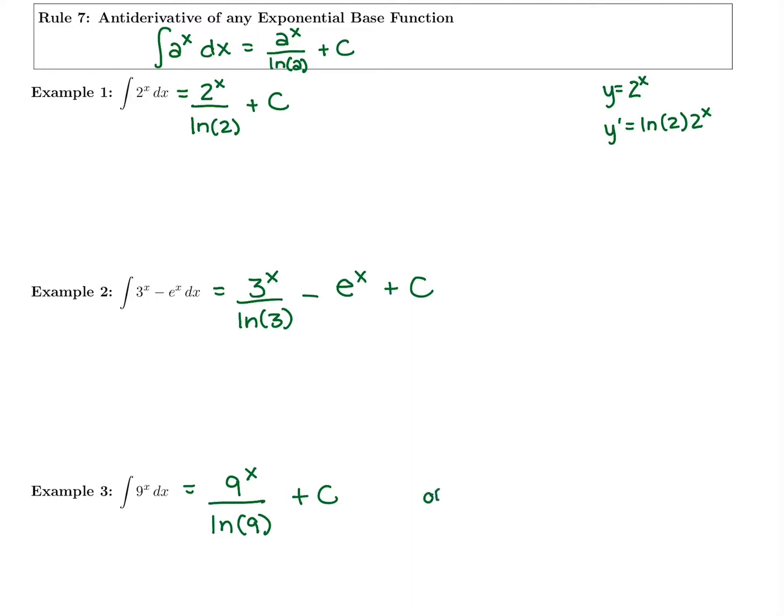Or another way of writing that, whichever ends up being easier for you to plug into your calculator. Instead of saying divided by ln of 9, you could put it out front. 1 over ln of 9 times 9 to the x plus c. Whatever is easier for you to plug into your calculator. It's the same thing as doing 1 half out front instead of dividing by 2. So there's a couple ways to write this rule, but I would typically say it is going to be your base to your power over ln of your base. So 9 to the x over ln of 9 for that last one.